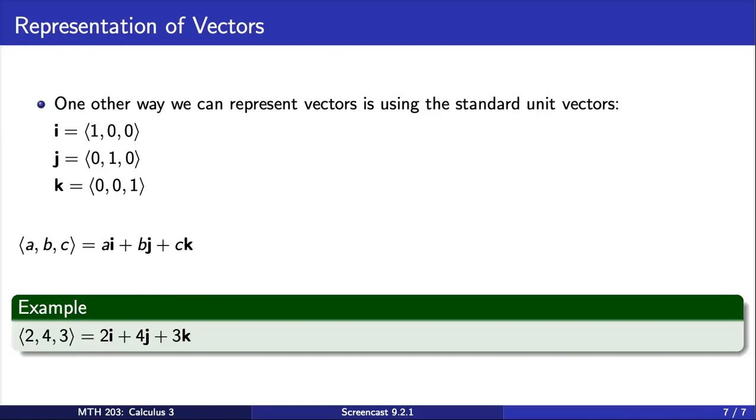As a quick example, we can represent the vector 2, 4, 3 as 2i plus 4j plus 3k.